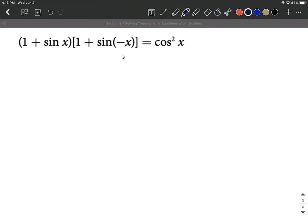To do so, I'm going to use an even odd identity. I'm going to bring along the 1 plus sine of x, and then I'm going to replace this with 1 minus sine of a positive x.